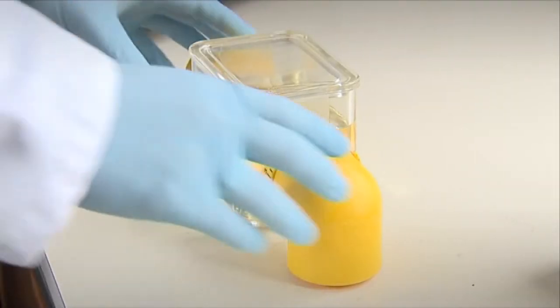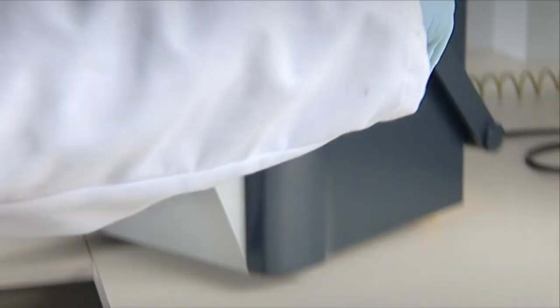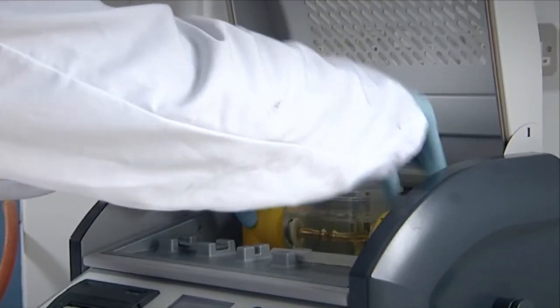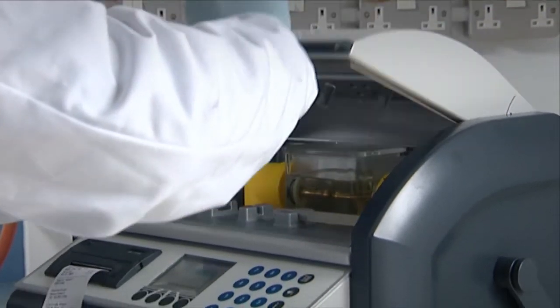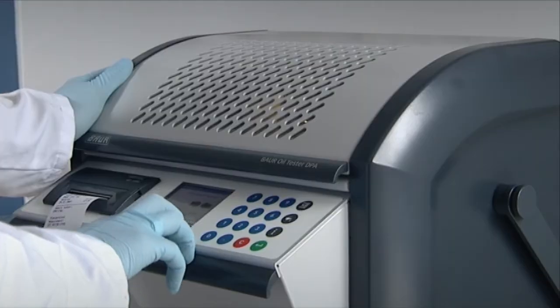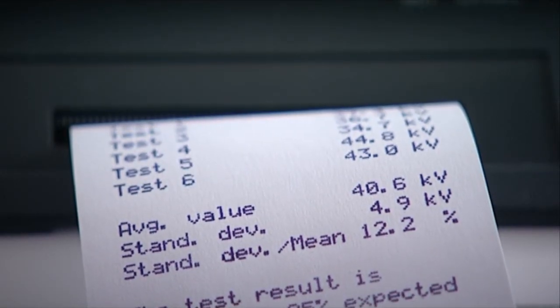The last test that's run is the electrical breakdown strength, and this is the voltage at which you get a breakdown of the oil across two electrodes. The dielectric breakdown strength of the oil is very dependent on the level of water and the level of solid contamination in the oil.